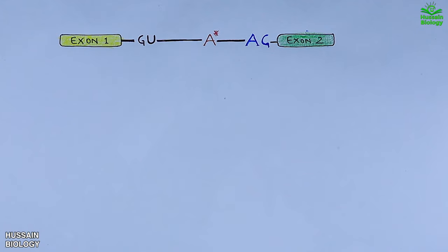Now to start the process, first of all U1 comes in and binds at the GU sequence towards the 5 prime splicing site as shown in the animation. This is termed as E complex or early complex.